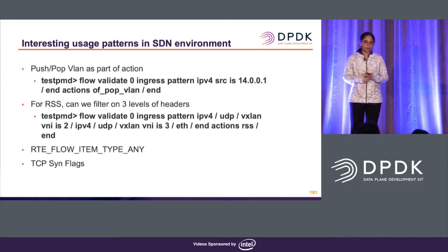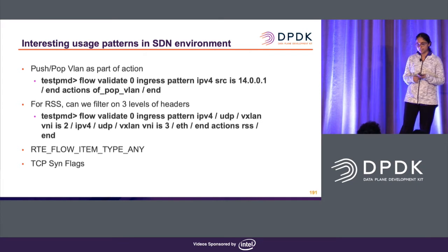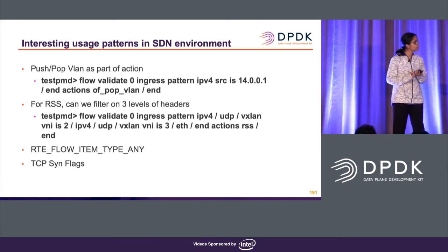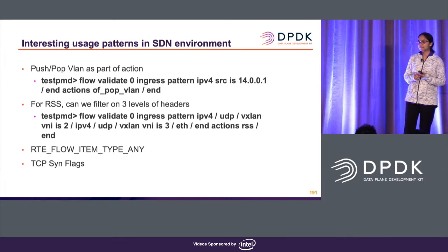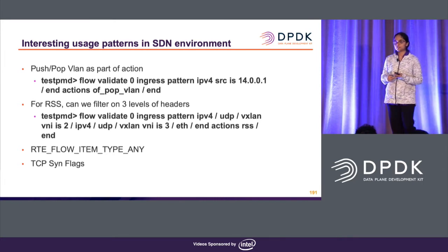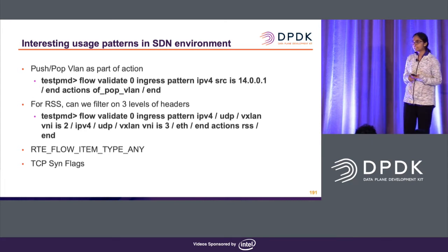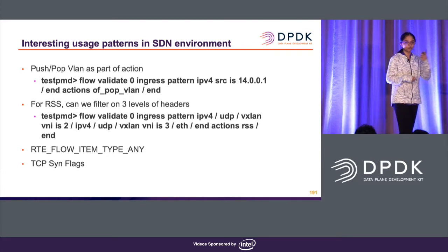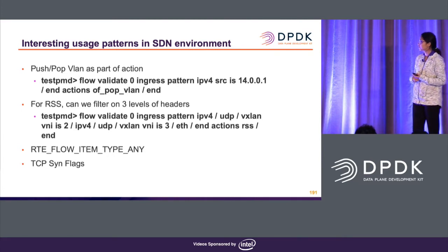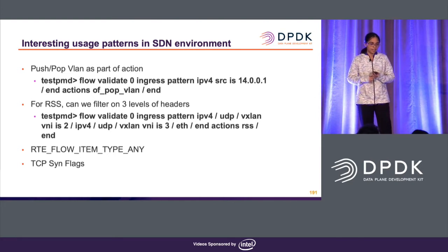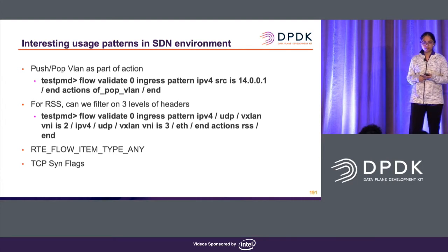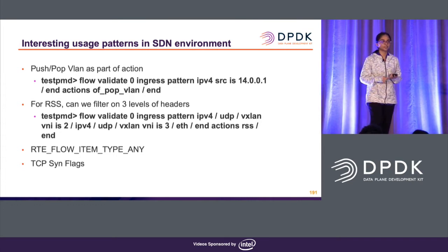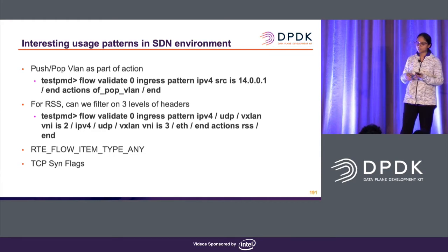In an SDN environment, a load balancer adds another level of encapsulation to a packet on top of an existing one, resulting in three levels of headers. If we can match on header values for all three levels — outermost, middle, and inner — that's a very important NIC feature. We used Action RSS for that. While looking into multiple levels of encapsulation, we came across a feature called RTFlowItemTypeNE, which is powerful because it lets you match a specific header value across different levels of encapsulation — for example, matching that the Ethernet destination MAC is a specific value across four levels of encapsulation.